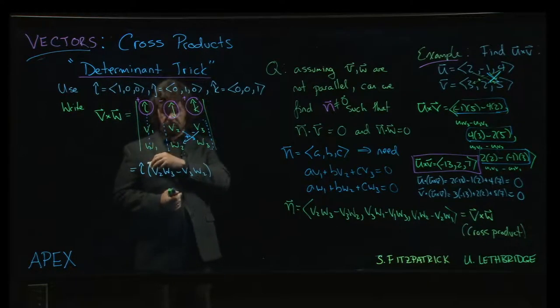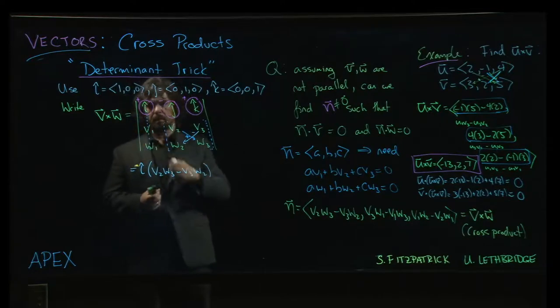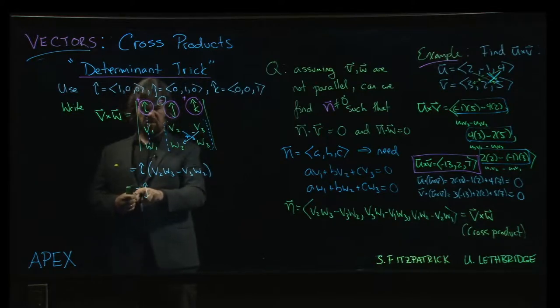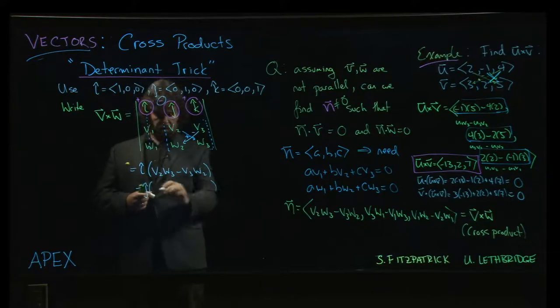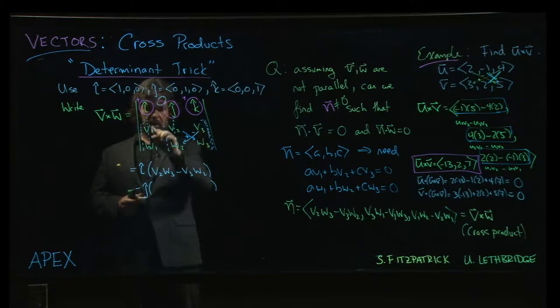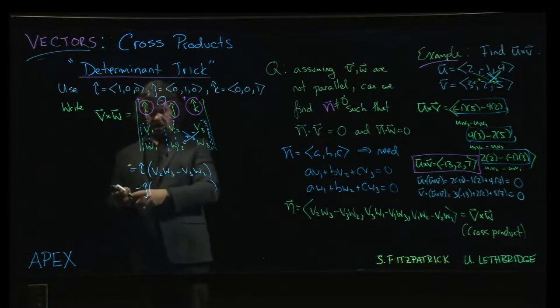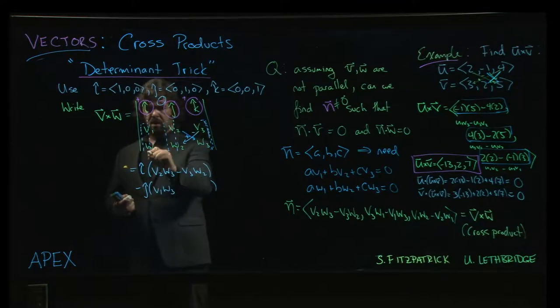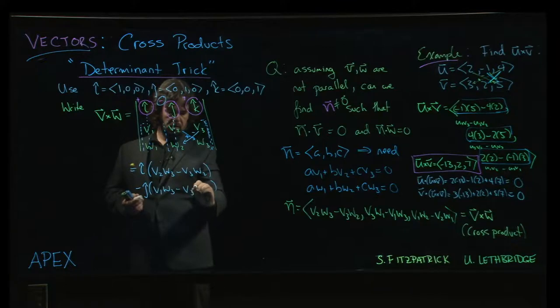Then we come to the next one, j. Now j has that minus sign, so we put minus j—we write that minus sign down right away. The numbers that go in here: we delete the two numbers that are below the j, take the two other columns v1·w1 and v3·w3, and we do the same cross multiplying: v1·w3 minus v3·w1.